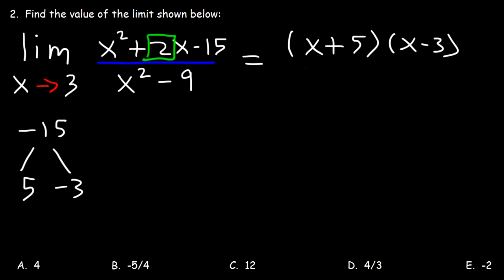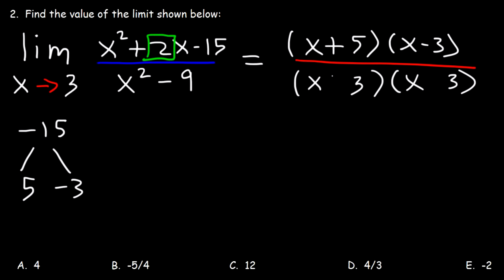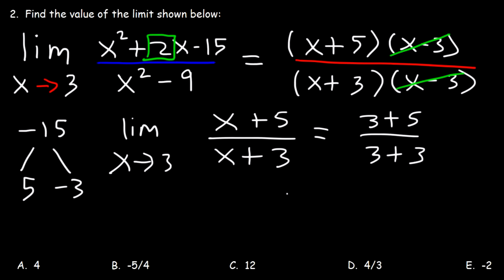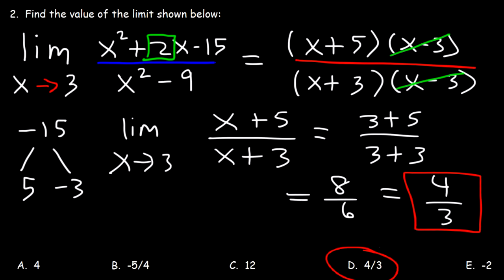Now on the bottom, we can factor x squared minus 9 because they're perfect squares. The square root of x squared is x, and the square root of 9 is 3. One of them is going to be plus, the other is going to be minus. Notice that we can cancel x minus 3. So now we can evaluate the limit as x approaches 3 of x plus 5 divided by x plus 3. So it's going to be 3 plus 5 divided by 3 plus 3, and so that's 8 divided by 6, which reduces to 4 divided by 3 if you divide both numbers by 2. So therefore D is the right answer.